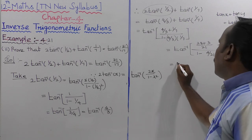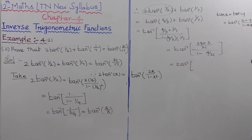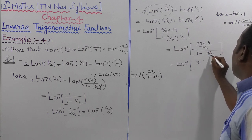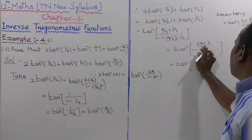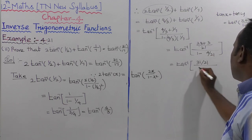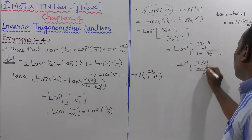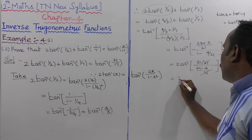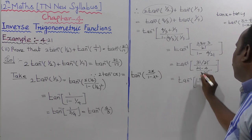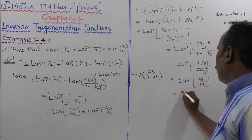That is equal to tan⁻¹ of (31/21) divided by (21/21 − 4/21), which is (31/21) ÷ (17/21). The 21s cancel, giving tan⁻¹(31/17). This equals the right-hand side.